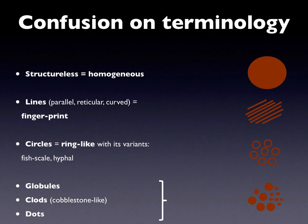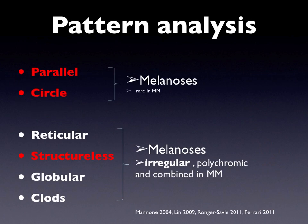The structuralist pattern corresponds to the homogeneous one. Lines can be parallel, reticular, and curved, and can have a fingerprint aspect. Circles are equivalent to the ring-like pattern. Clots are also called cobblestone-like patterns. Under dermoscopy, melanosis can be presented with parallel, circle, reticular structures, or globular dotted pattern.